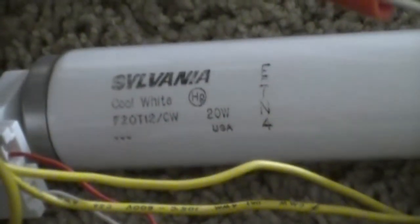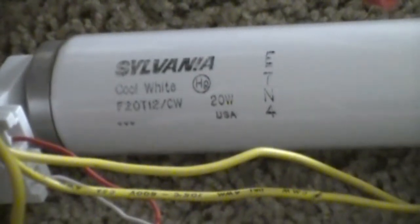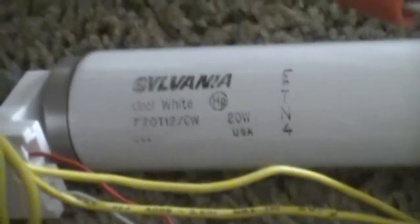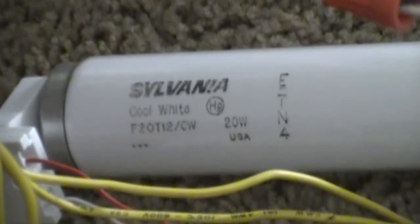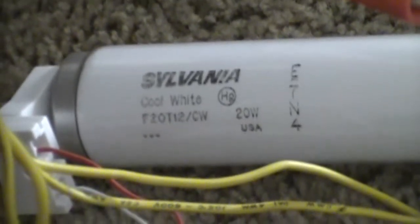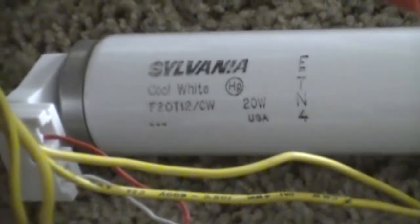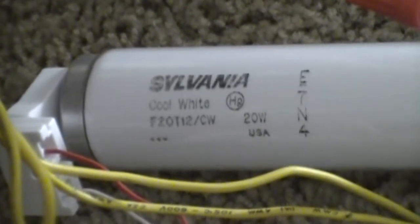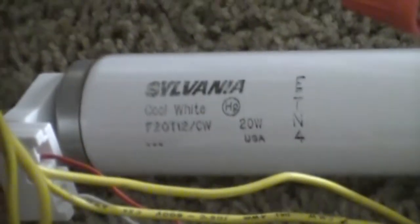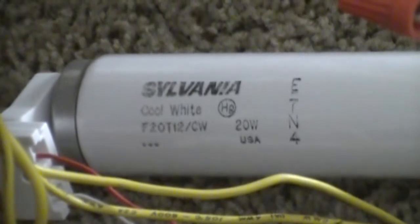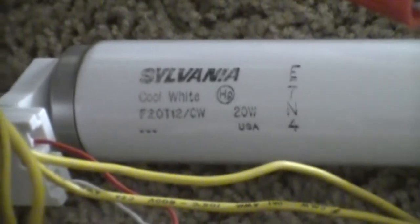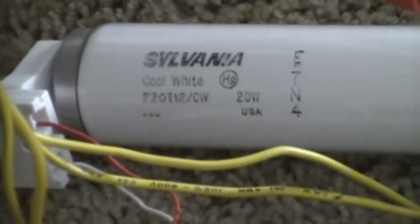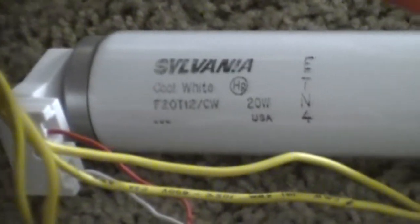And our top lamp is a Sylvania of much more recent manufacture. I'm going to say it was made 2004. Any lighting enthusiasts out there that know how to read Sylvania date codes, please either leave a comment or PM me so I can know how to read them myself, because I'd like to know when this tube was made.